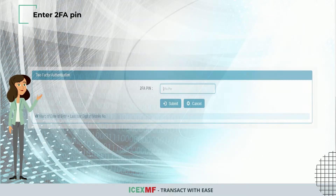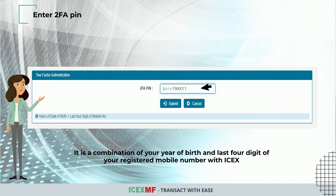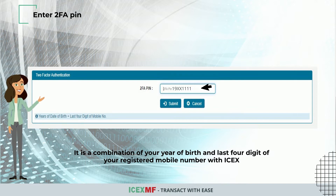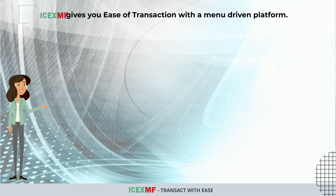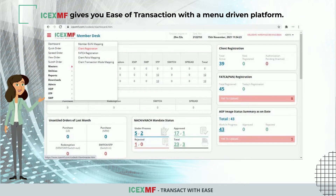Enter the 2FA PIN, which is a combination of your year of birth and the last four digits of your registered mobile number with ICEX. ICEX MF gives you ease of transaction with a menu-driven platform.